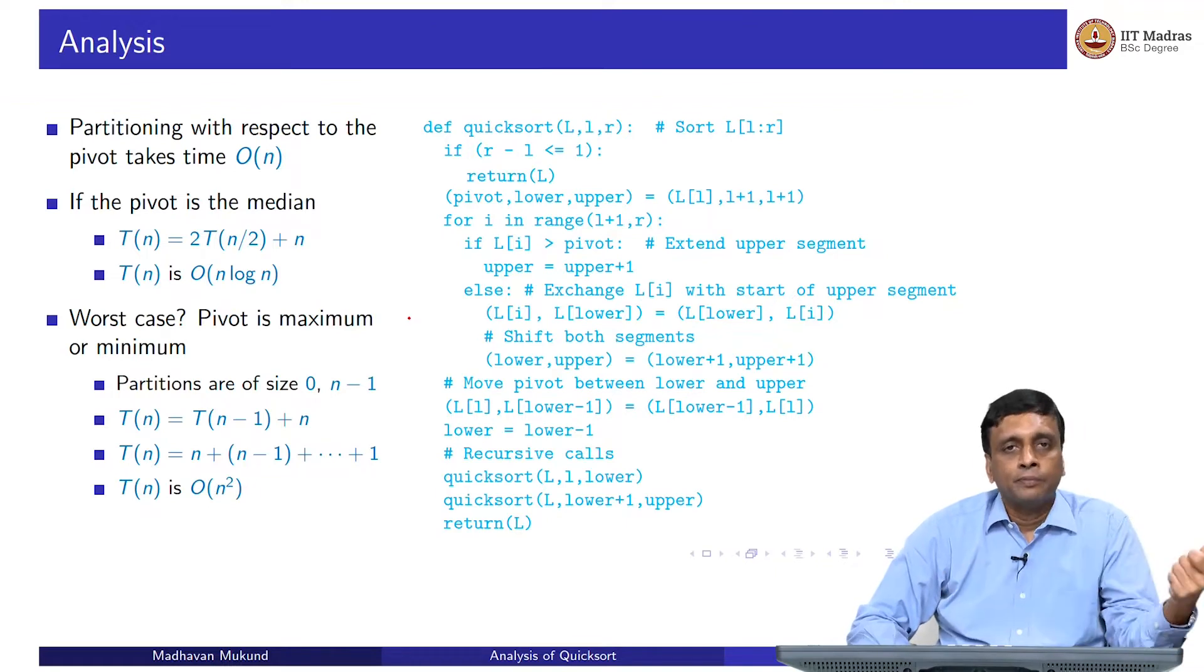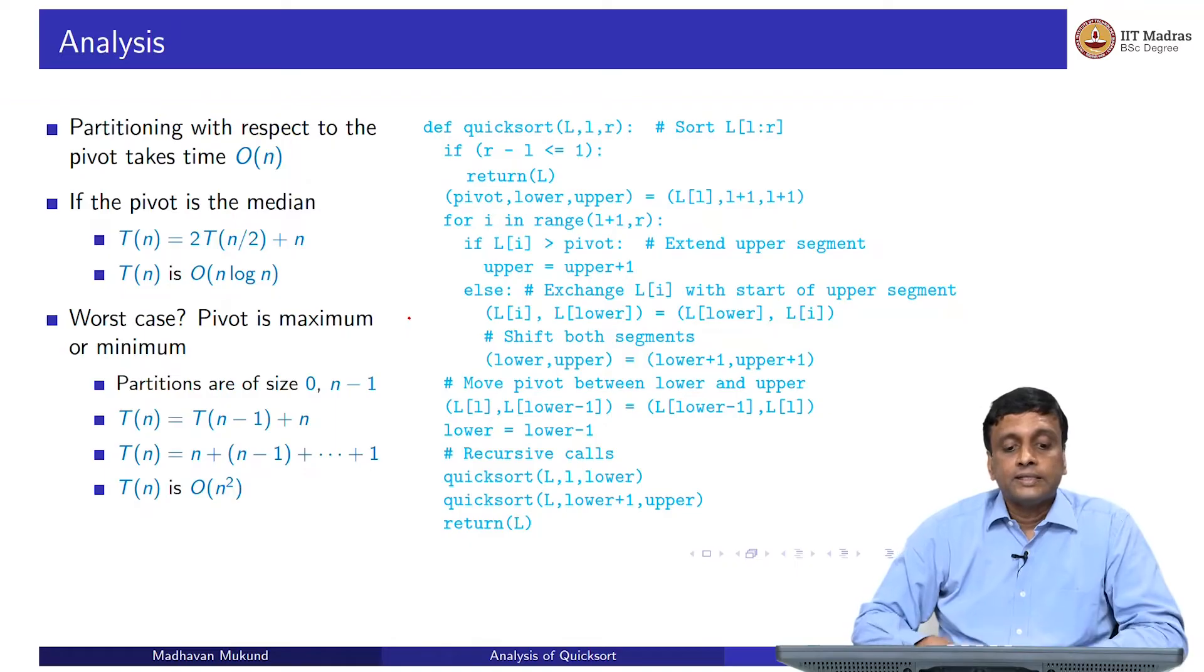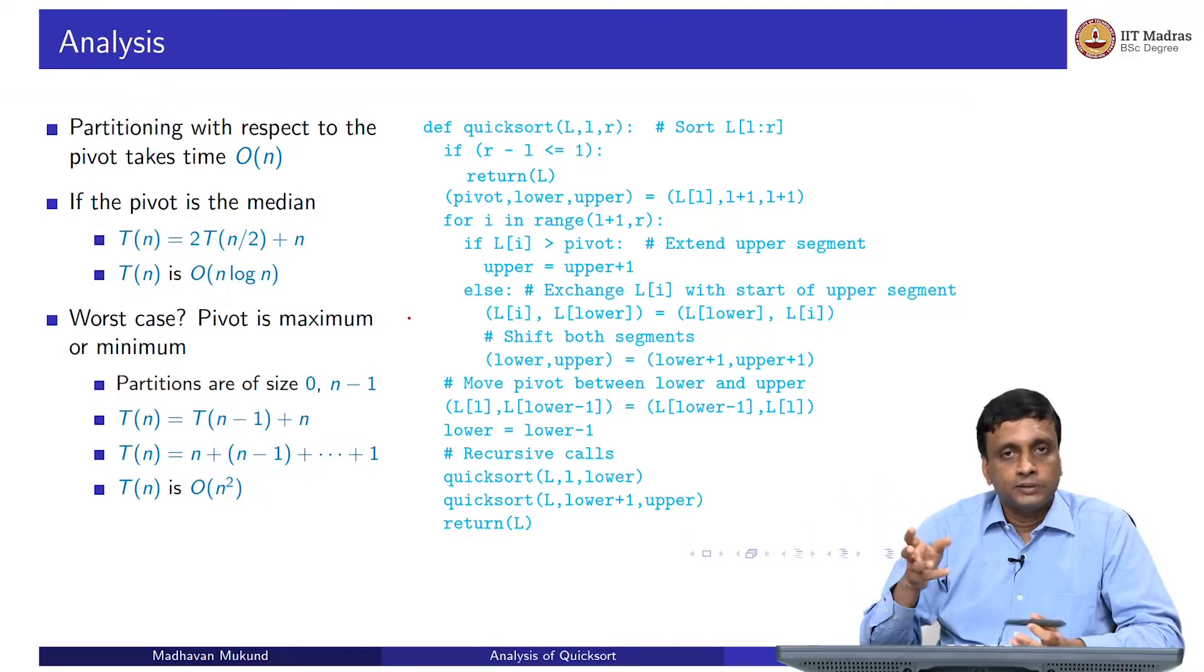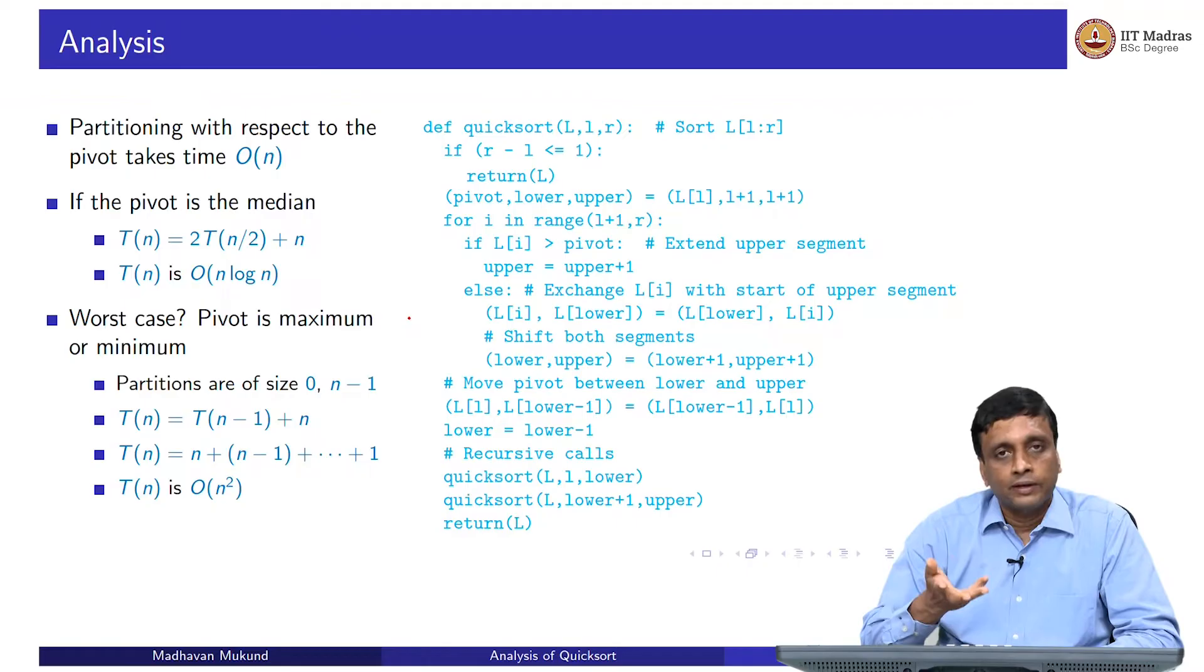Either the lower will be empty and the upper will be n minus 1 elements or vice versa. This is worst case, we cannot avoid it. In this case, the recurrence says that to sort n, I end up having to sort the larger partition which is n minus 1, and I have spent order n work getting there. I have exactly the same recurrence as selection sort: T(n) is T(n-1) plus n, which ends up being n squared.